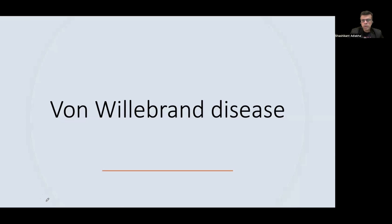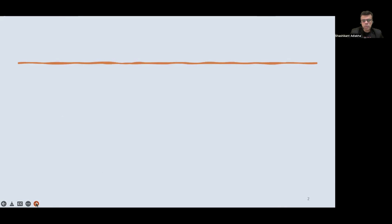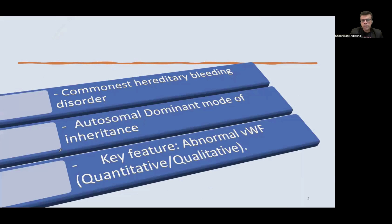Hello and welcome everyone. Let's discuss today regarding Von Willebrand disease, an important clinical disease that leads to bleeding and coagulation manifestations. Von Willebrand disease is the commonest hereditary bleeding disorder. It has an autosomal dominant mode of inheritance.